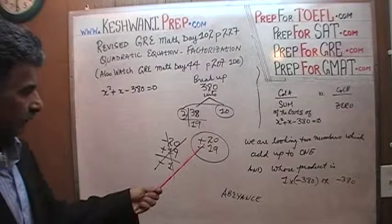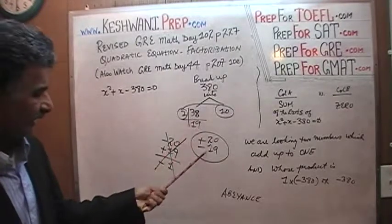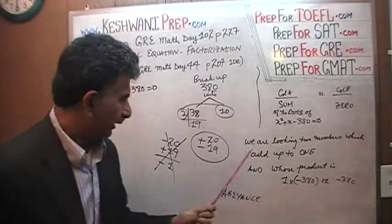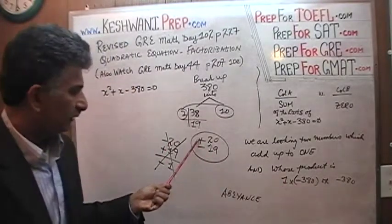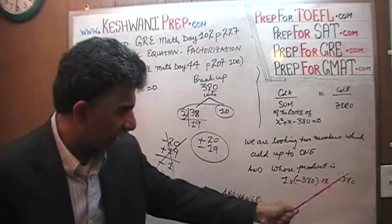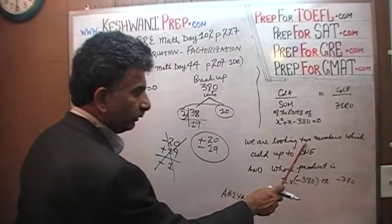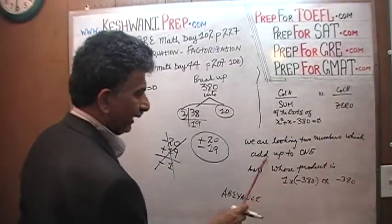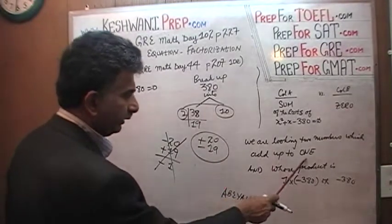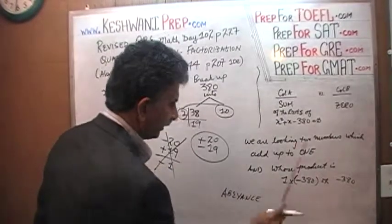If we multiply them: 19 times 2 is 38, times 10 gives us 380 — and since it's positive 20 times negative 19, we get negative 380. Which is exactly what we were looking for. We needed two numbers which add up to 1 — positive 20 and negative 19 add up to 1 — and whose product is negative 380. That's it.